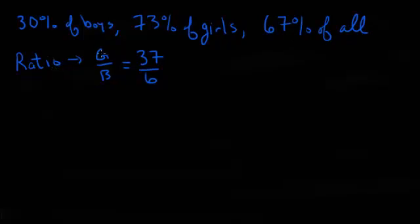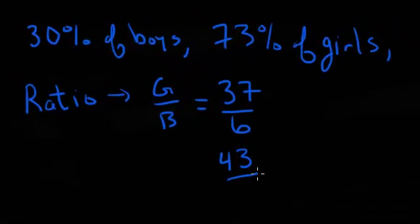The ratio we found previously was that the ratio of girls to boys is 37 to 6, so there's 37 girls for every six boys. What we're trying to do now is we're trying to find the total number of students in the school, and what we can tell right now is that the number of girls and boys, 37 to 6, is going to give us a total of 43 students currently, but that doesn't really make sense.